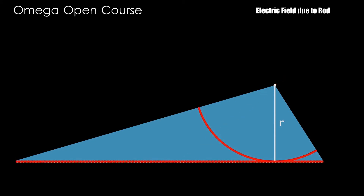Thus, the electric field due to this rod is the same as the electric field due to this arc. But due to symmetry, the electric field due to this arc must be in the direction of the bisector of the arc. So, to find the electric field due to any rod at any point, just replace the rod with an arc whose center is at the given point and whose radius equals the perpendicular distance of the point from the rod. Make sure the ends of the arc make the same angle at the point as the ends of the rod, and keep the linear charge density of the arc the same as that of the rod.